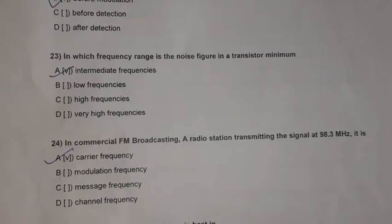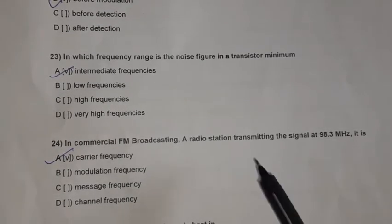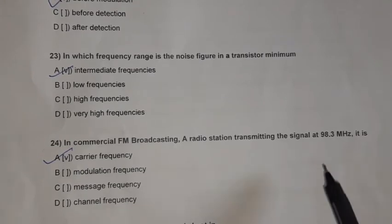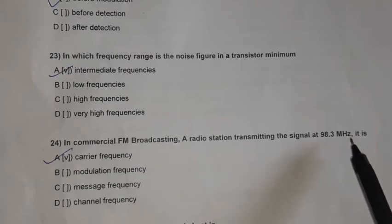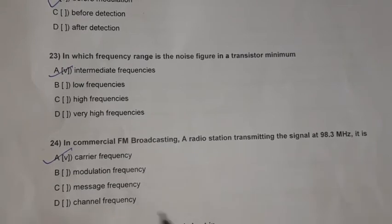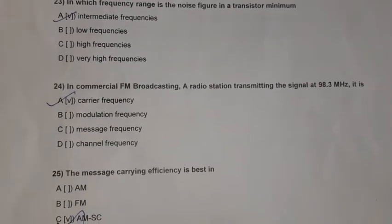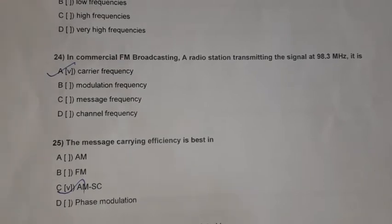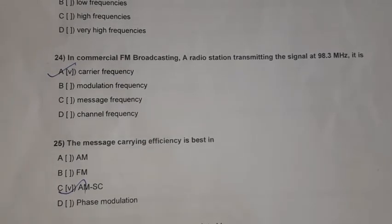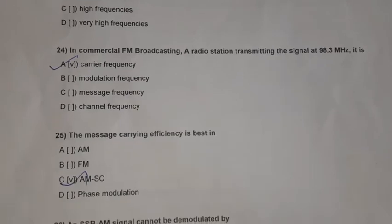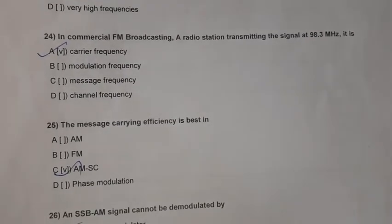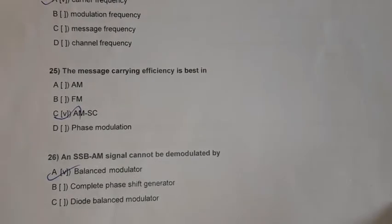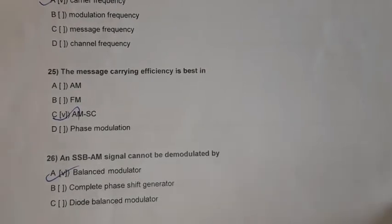Question 24: In commercial FM broadcasting, an AM radio station transmitting at 98.3 megahertz — this is the carrier frequency. Question 25: The message-carrying efficiency is best in AM suppressed carrier (AM-SC). Question 26: An SSB signal cannot be demodulated by a balanced modulator.